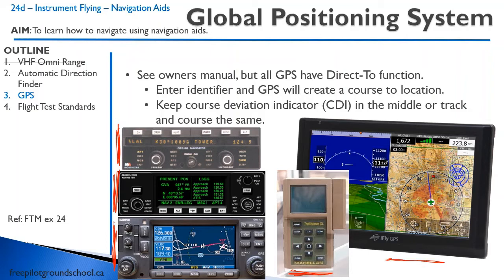Now you have fancy GPS units on tablets with synthetic vision — it's really amazing. But basically, all these GPS units have a direct-to function, usually a D with an arrow through it. You select direct-to, use the knobs to select the airport or waypoint you want, hit enter, and a course deviation indicator comes up. Just keep that CDI in the middle.